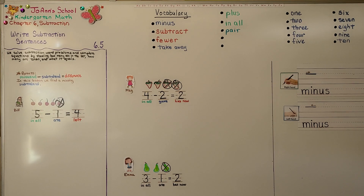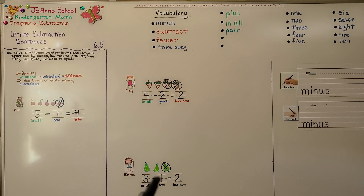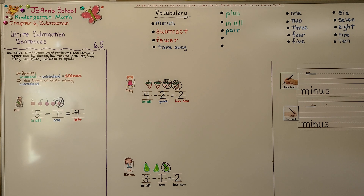For these problems, the number after the minus sign is the number we have to cross out. In our next lesson, 6.6, we're going to write more subtraction sentences. I hope you're doing well, and I hope you'll join me. Bye.